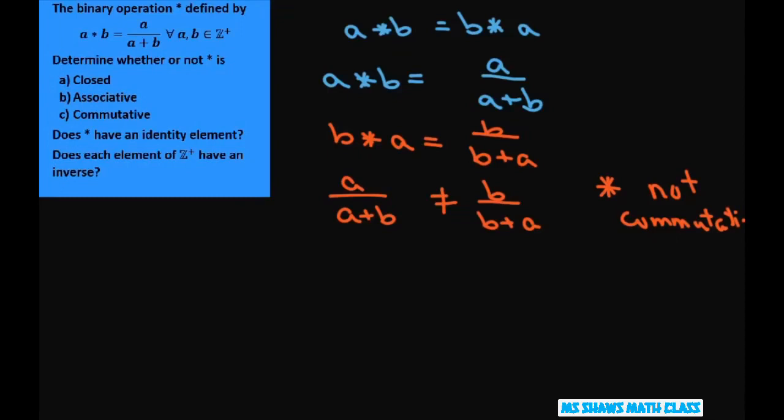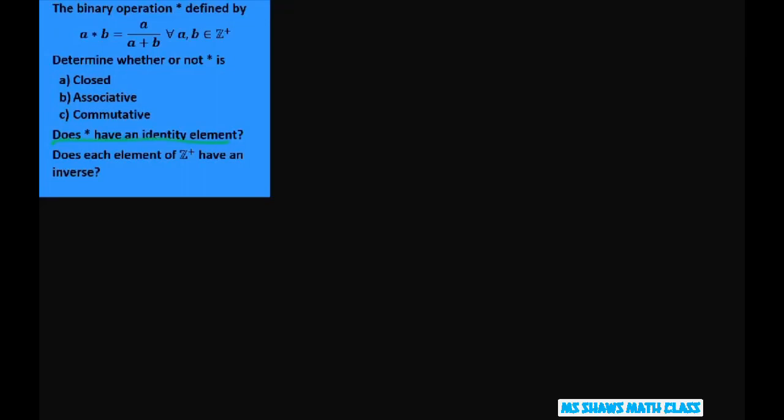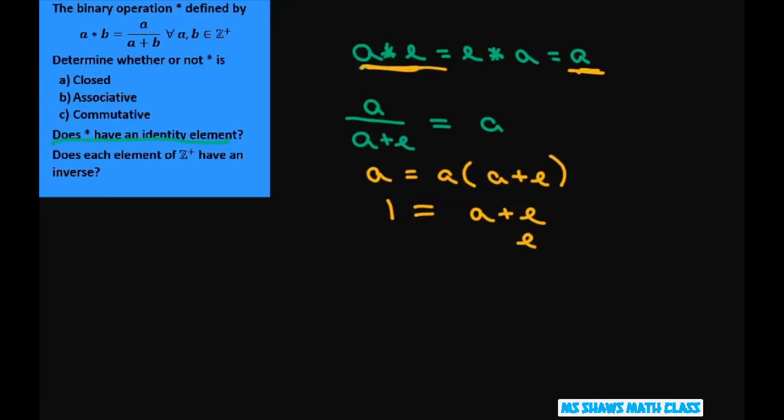Okay, does it have an identity element? So let's look at that. So what you want to do is you want to check for a star e equals e star a equals a. So for this first part, that gives you a divided by a plus e equals a. I'm doing this part with this. Cross multiply, you get a equals a times a plus e. So that's basically going to give you e. You can cancel out the a's, so you get 1. You can cancel these a's out. Divide both sides by a, and you get 1 equals a plus e. So e equals 1 minus a.